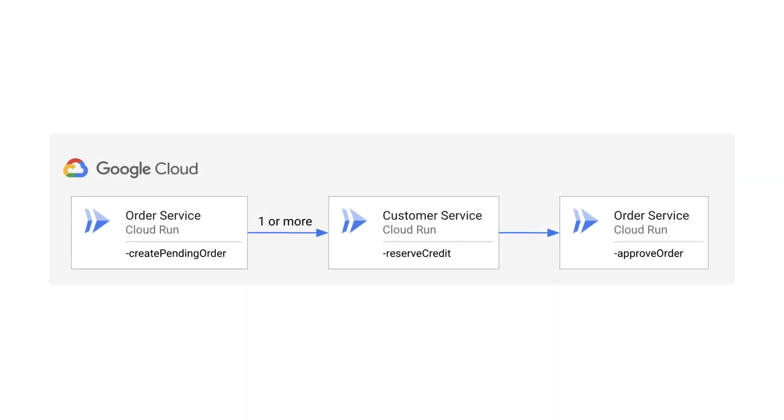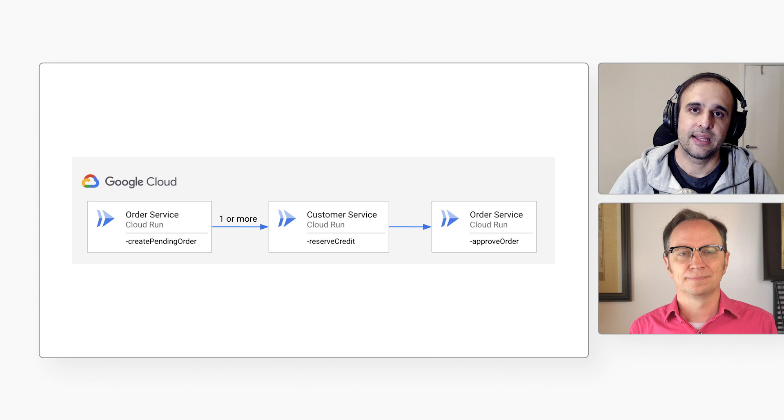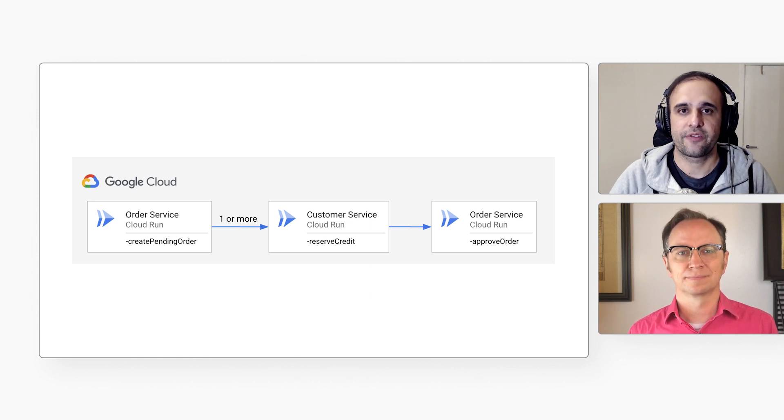And we may not want that. Definitely not. We need to think about how to handle failures, and that depends on the nature of the failure. For example, let's say the reserve credit endpoint in customer service is flaky — it fails once in a while due to some transient error, like network errors. One easy way of handling transient errors is to apply a retry policy. Instead of calling an endpoint once, you can retry two or three times if it fails.